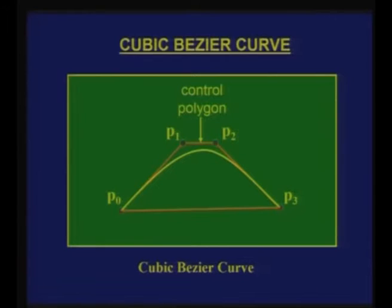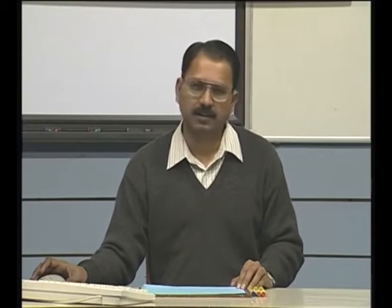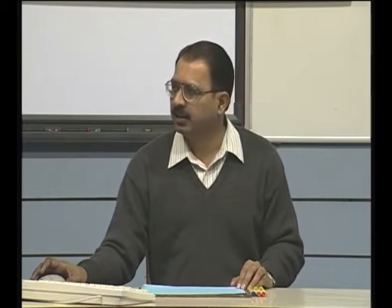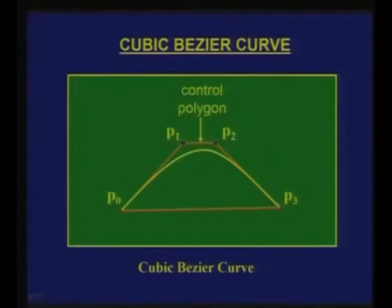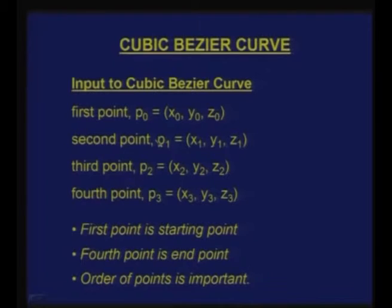Another name for the control polygon is the characteristic polygon, which is the term used in some texts. The input to a cubic Bezier curve consists of four control points, each defined by three coordinates: (x0, y0, z0), (x1, y1, z1), (x2, y2, z2), and (x3, y3, z3). The first point is the starting point and the fourth is the end point — the curve passes through both of these.